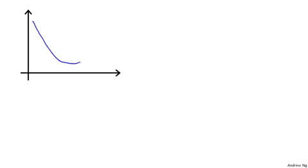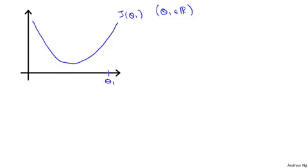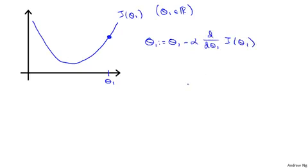Here's my function j of theta one, and theta one is a real number. Let's say I've initialized gradient descent with theta one at this location. Imagine that we start off at that point on my function. What gradient descent will do is it will update theta one as theta one minus alpha times d/d(theta one) of j of theta one.